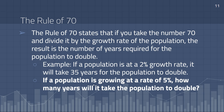Practice question: if a population is growing at a rate of 5%, how many years will it take the population to double? The answer is 14 years — we take 70 divided by the 5% growth rate and get 14 years for that population to double.